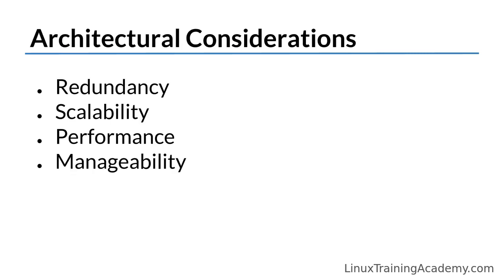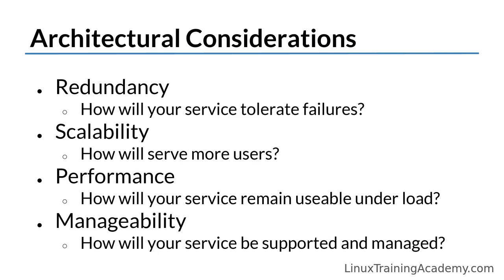Each project may have varying requirements, but in general there are a few important points to at least consider. They are redundancy, scalability, performance, and manageability. Redundancy is how to tolerate failures. Scalability is how to serve an increasing or decreasing user base. Performance is how to ensure each user's experience is at or beyond an acceptable level.